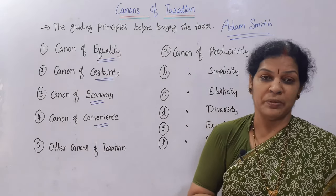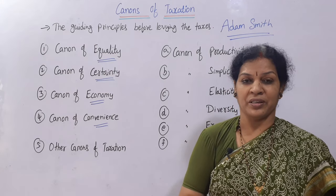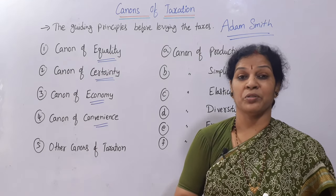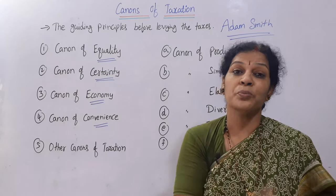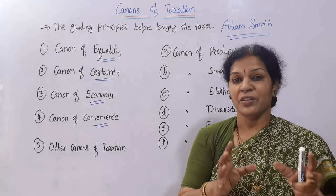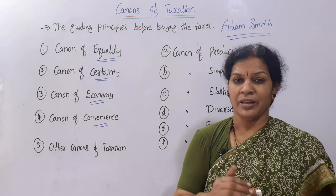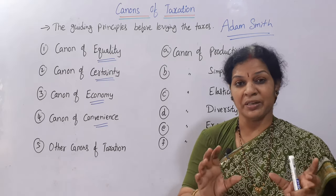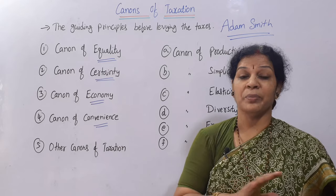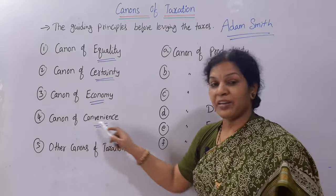The next canon is the canon of convenience. The tax policy must be convenient for all kinds of people. Especially in developing countries like India, most people are farmers and small traders. When a taxation policy is introduced, these people can get confused. So the methodology should be easy, payment of taxation simple, and there should be clarity about income slabs and how to pay. It must not cause confusion and must be convenient to the maximum number of people in the country.